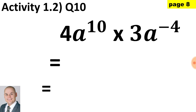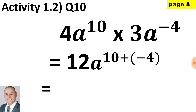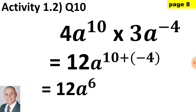Here we have two coefficients, 4 and 3, which when multiplied give us 12. The bases are the same, and when multiplying bases that are the same we add the exponents. We have a negative sign, so use brackets. The coefficients of 12 with base a and exponent of 10 plus (−4) gives a final answer of 12a to the 6.